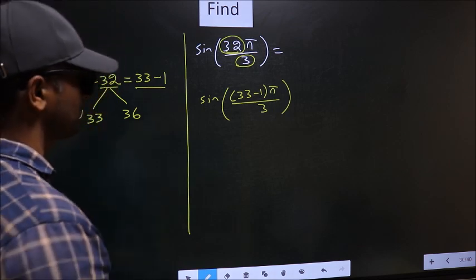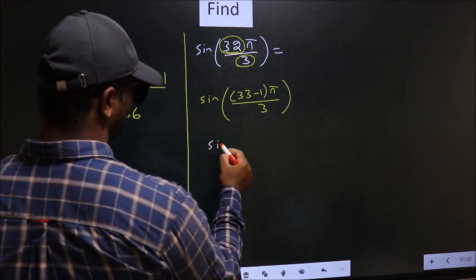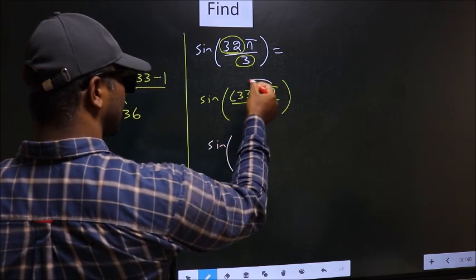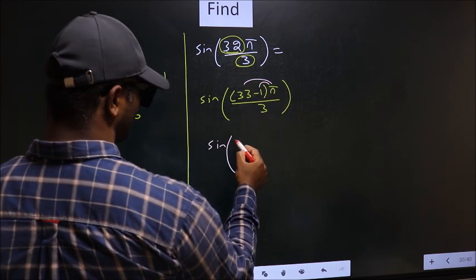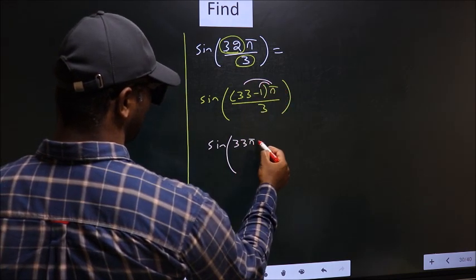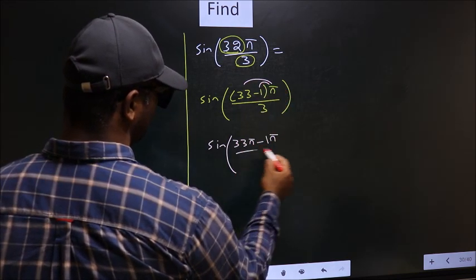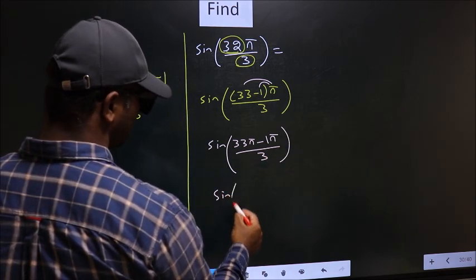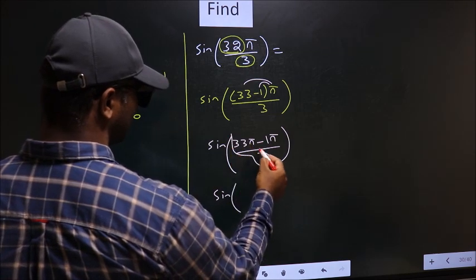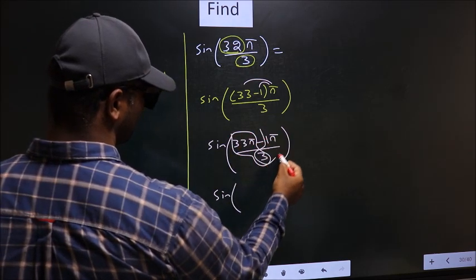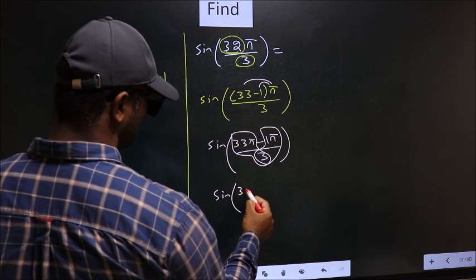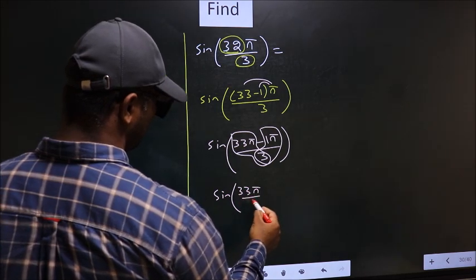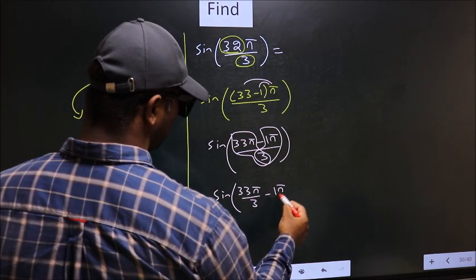Next, now you should open up the brackets. So you get 33π minus 1π by 3. Next, now split the denominator in this way: that is 33π by 3 minus 1π by 3.